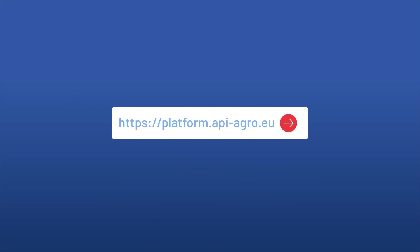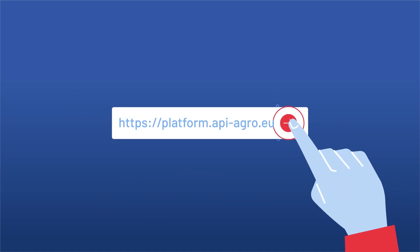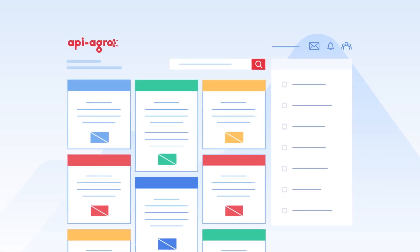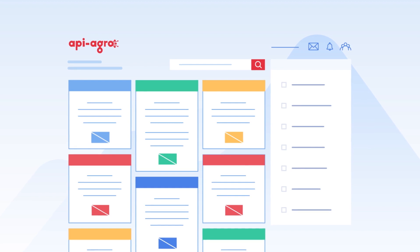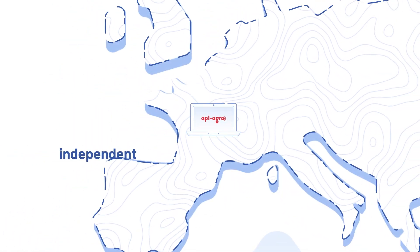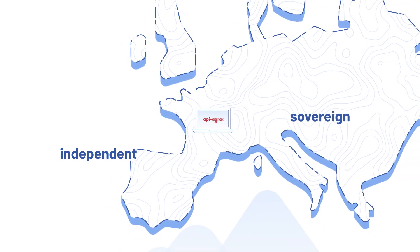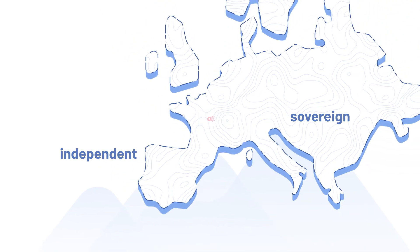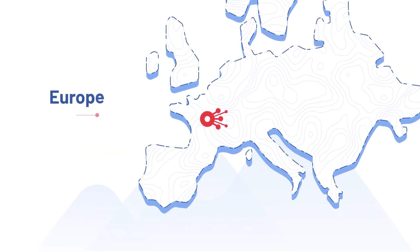Don't leave your data to doze. Exploit it using the first interactive catalogue of qualified agricultural data. Secure, independent and sovereign, API Agro Solution is the main data exchange platform for the agricultural sector in Europe.